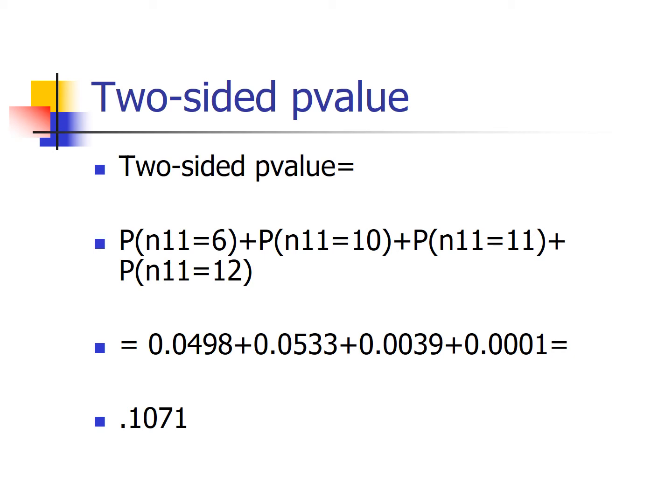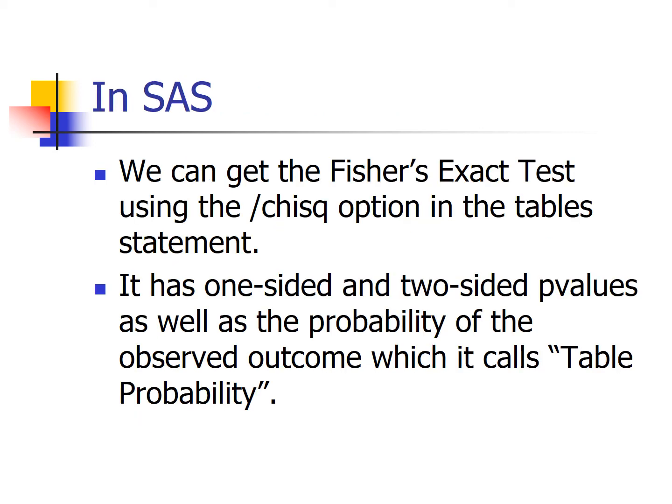Because of the nature of the discrete distribution, we compute the two-sided p-value a little differently. How do we get SAS to do this? Fisher's exact test is actually part of the slash chi-square option. If you go back to some previous slides, you'll see the Fisher's exact output there — we just weren't emphasizing it because we hadn't been introduced to that test yet.